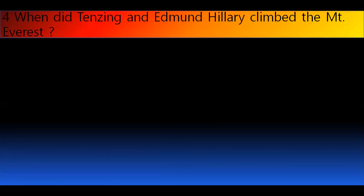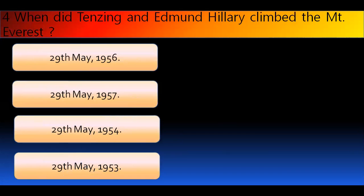Question number 4. When did Tenzing and Edmund Hillary climb the Mount Everest? Options are 29th of May 1956, 29th of May 1957, 29th of May 1954, 29th of May 1953. And the right answer is 29th of May 1953.